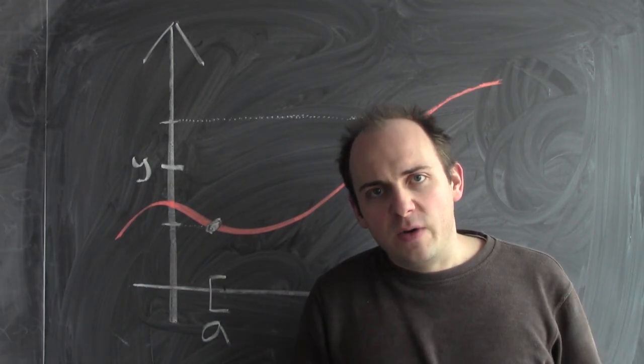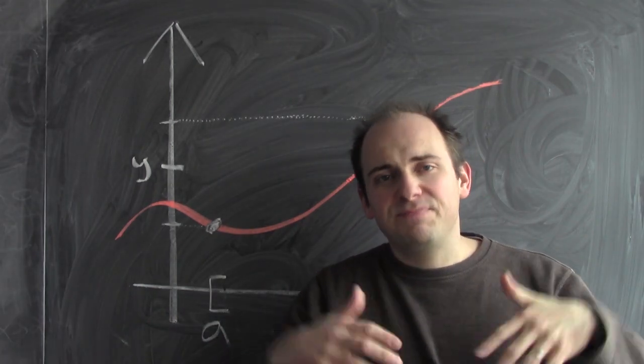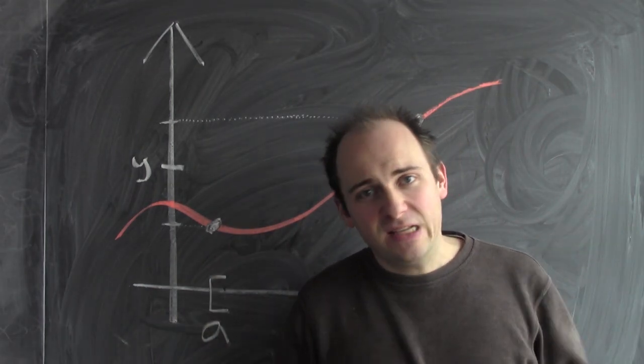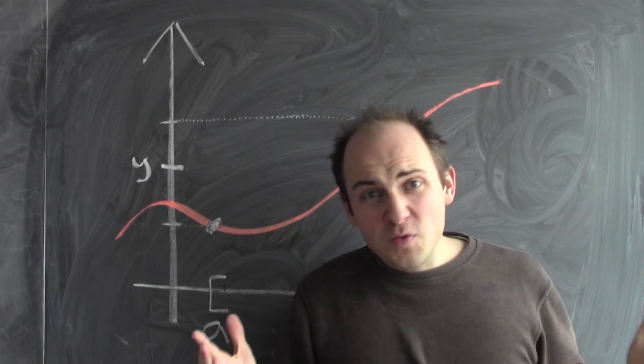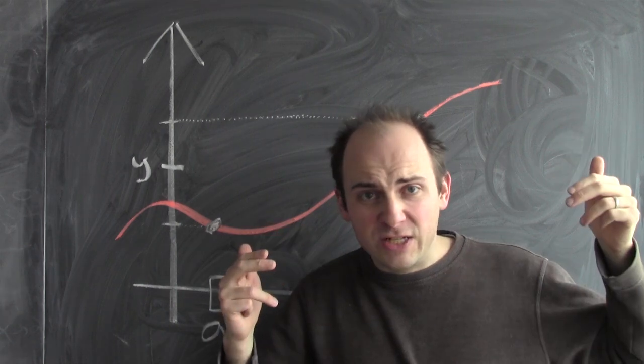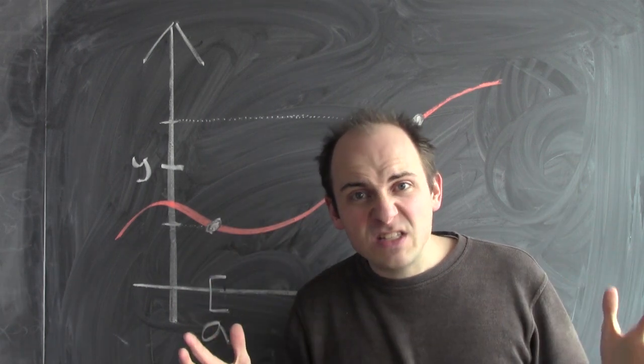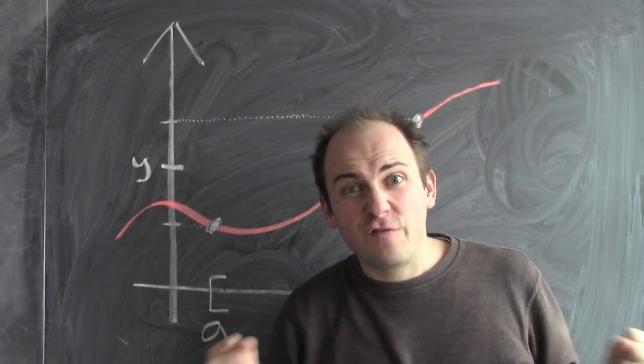So far, we've been selling continuity as something about nearness. Continuous functions preserve nearness, so nearby points get sent to nearby points. But continuity isn't just about how small changes become small changes. Continuity has consequences for the global structure of the function as well.